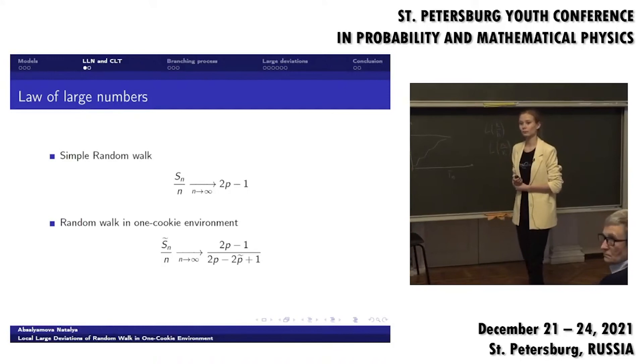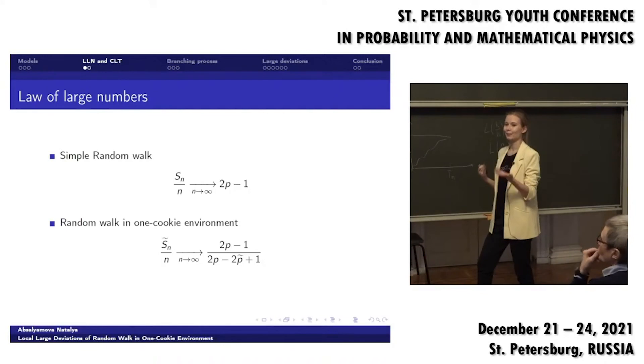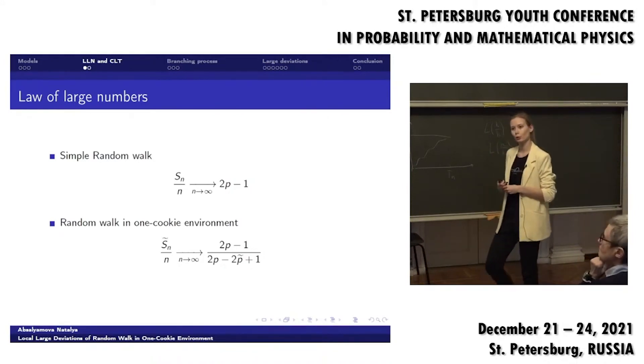Another question. In some papers, there are, in some articles, there are cookies with random variables, with random probabilities of each cookie.